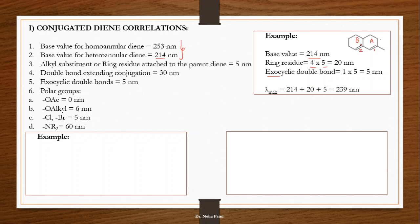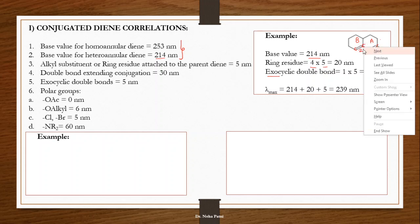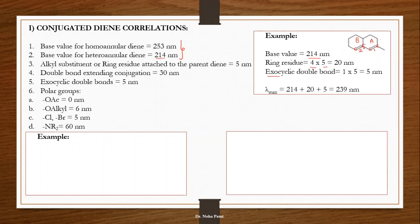Now for exocyclic double bonds: bond number one is not exo to ring B because the carbon of bond one is not shared with that ring. Bond number two is exo to ring A because that carbon is shared with ring A. So there is only one exocyclic double bond, contributing 5 nm. Totaling everything gives 239 nm.